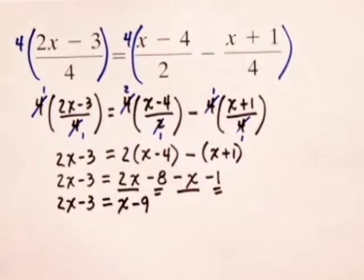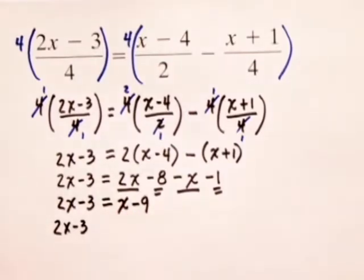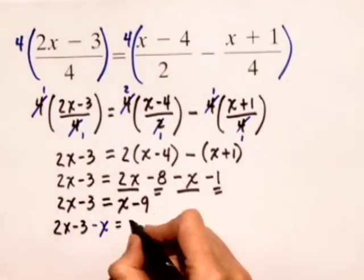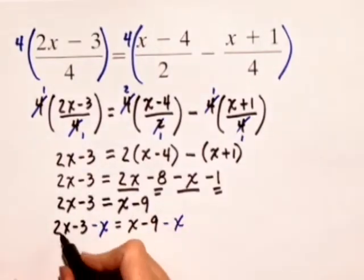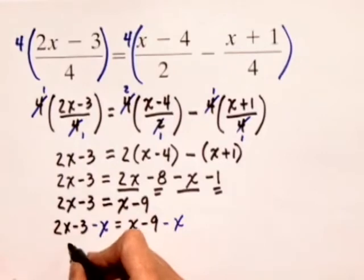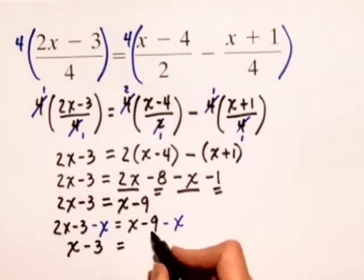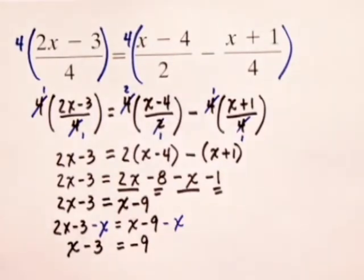Now, let's go ahead and move the x's to the left hand side of this equation. So we have 2x minus 3, and we're going to subtract x from both sides, minus x, equals x minus 9 minus x. When we do that, on the left hand side, we have 2x minus x, which just gives us x minus 3, is equal to, on the right hand side, the x and the minus x add to 0, so we have only negative 9 left.